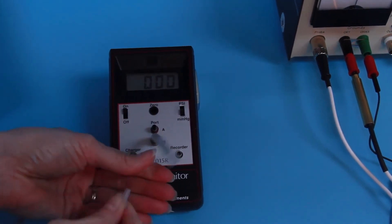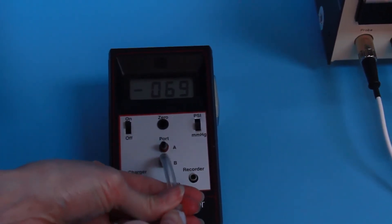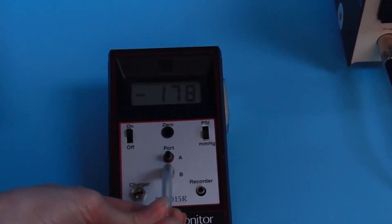Then connect the vacuum source to port B on the meter to monitor the vacuum. Regulate the vacuum up or down until the manometer reads approximately negative 150.